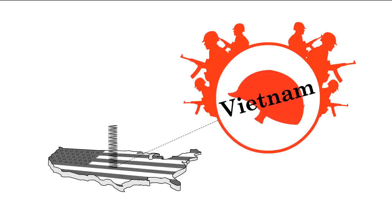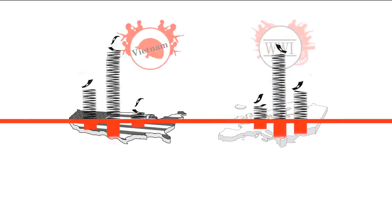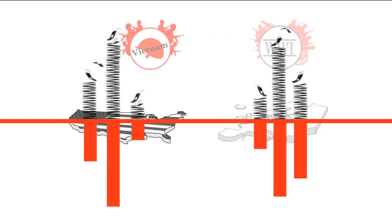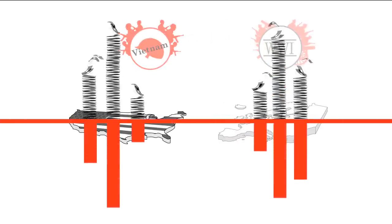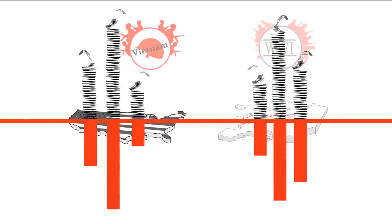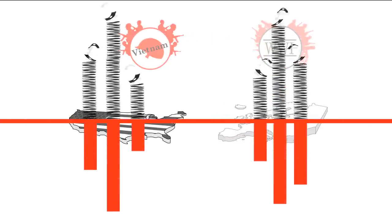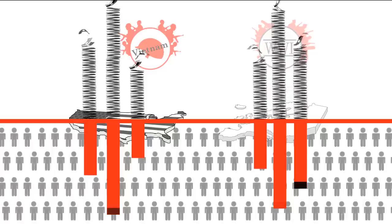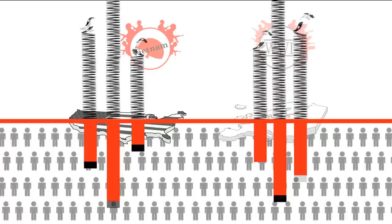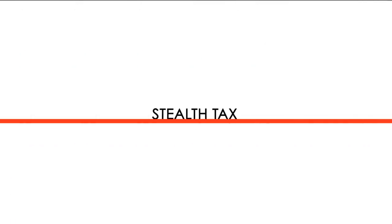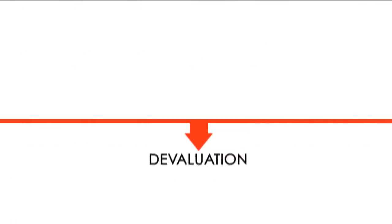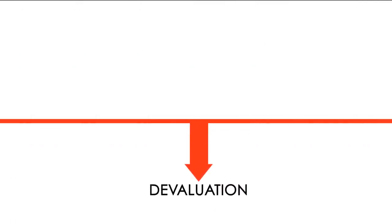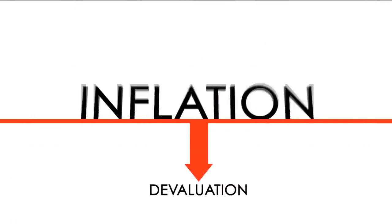Sound familiar? If governments didn't have the power to run up deficits, these wars could never have happened. There wasn't the gold to pay for them. The bill is eventually paid by the people through the stealth tax that is currency devaluation by inflation.